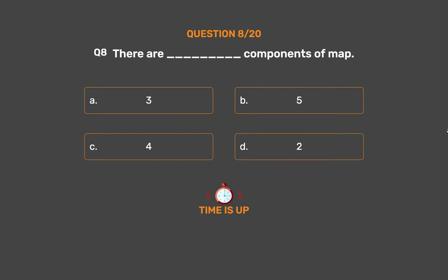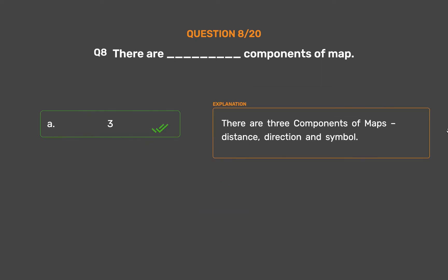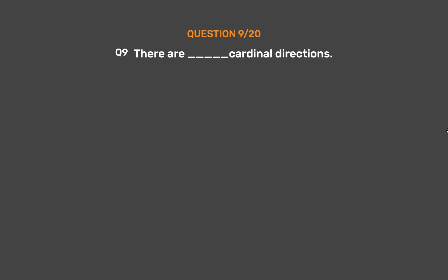The correct answer is Option A: 3. There are three components of a map: distance, direction, and symbol.